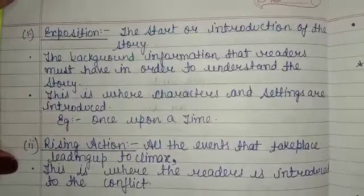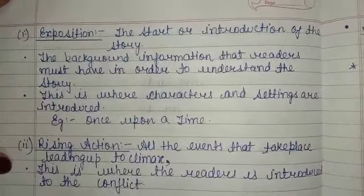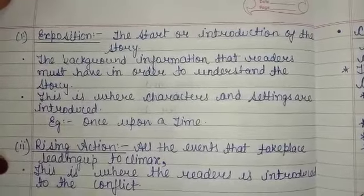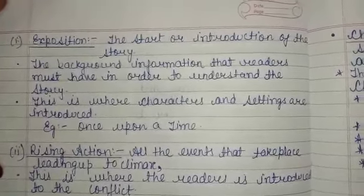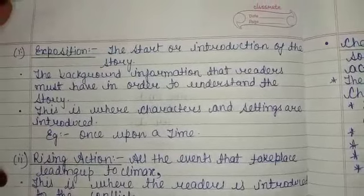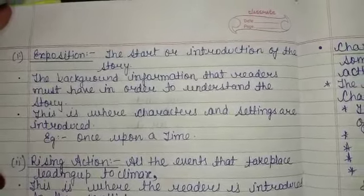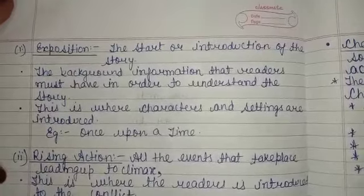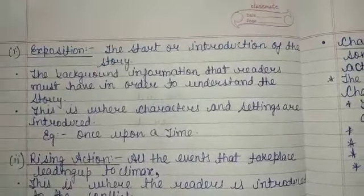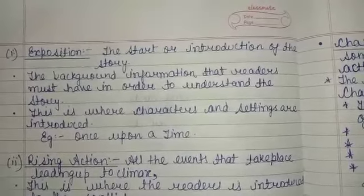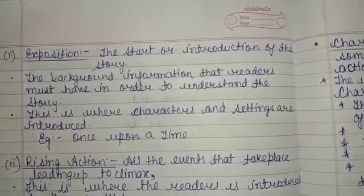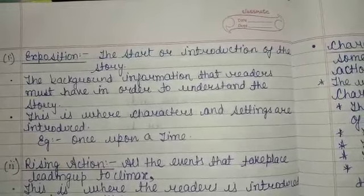First of all, we will discuss what is happening in the exposition. The start and introduction of a story is known as the exposition. In the exposition, we start stories like 'once upon a time there was a big king of London.' The background information that readers must have in order to understand the story is known as the exposition. This is where characters and settings are introduced.